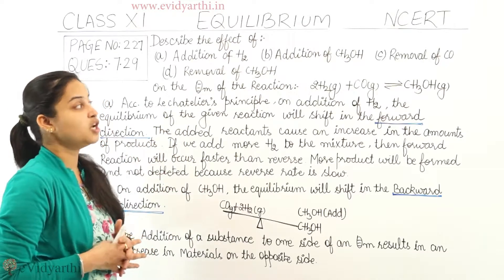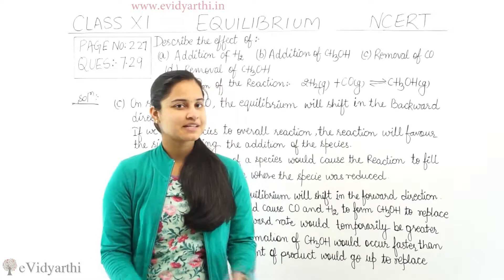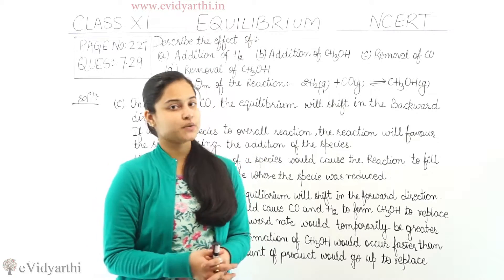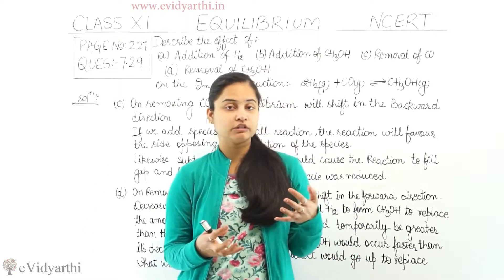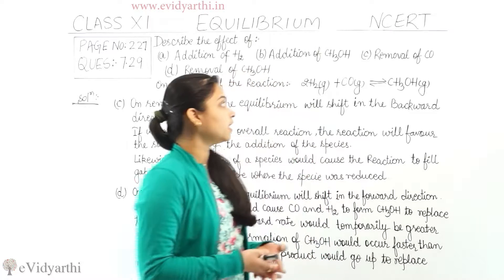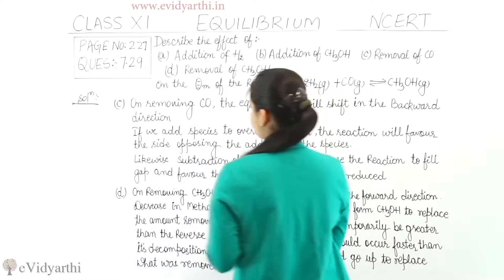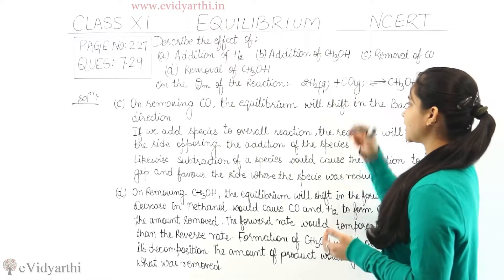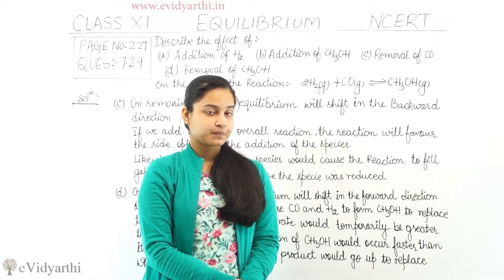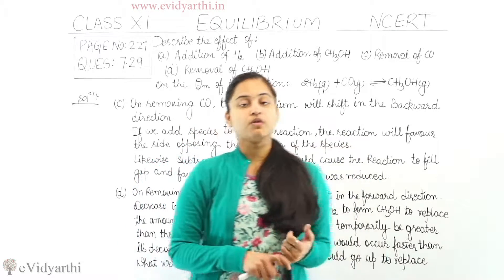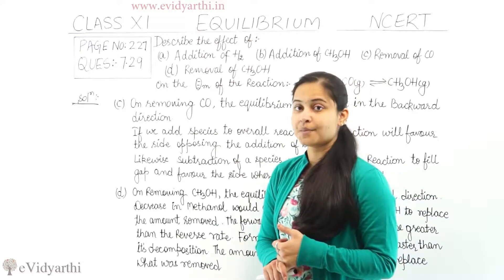This was Part A and Part B. Now discussing Part C — removal of CO. What will be the effect on the equilibrium mixture when there is removal of carbon monoxide? When CO is removed from the reactant side, the reaction will shift in the backward direction. So removal of CO will lead the equilibrium to shift in the backward direction.